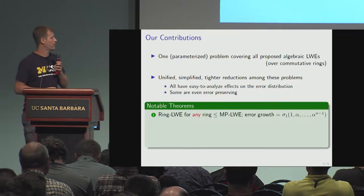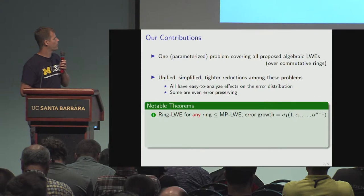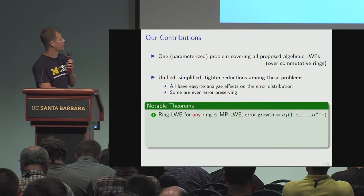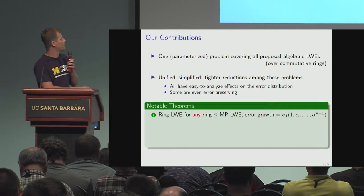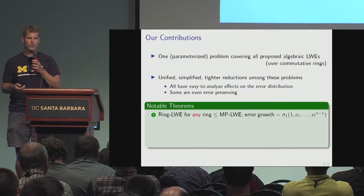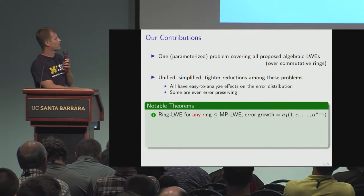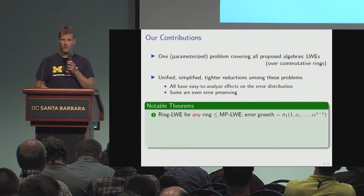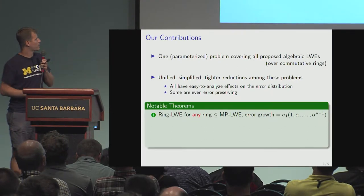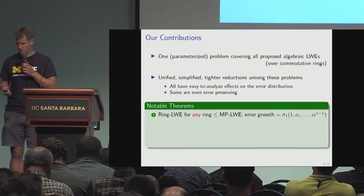What's nice about this is we reprove, with tighter bounds and simpler proof, a theorem which says that to break middle product LWE, you have to break ring LWE in all rings subject to this constraint. That gives very nice strength to middle product LWE.